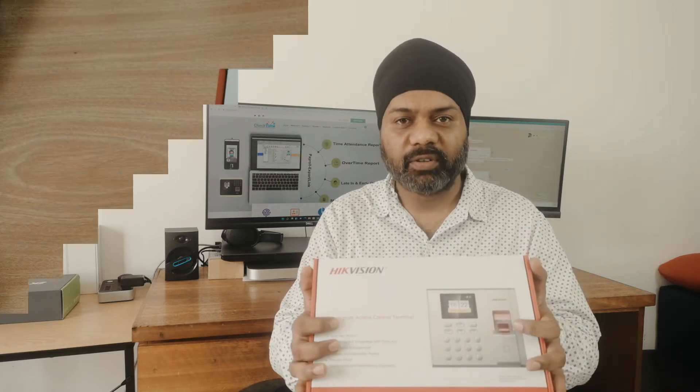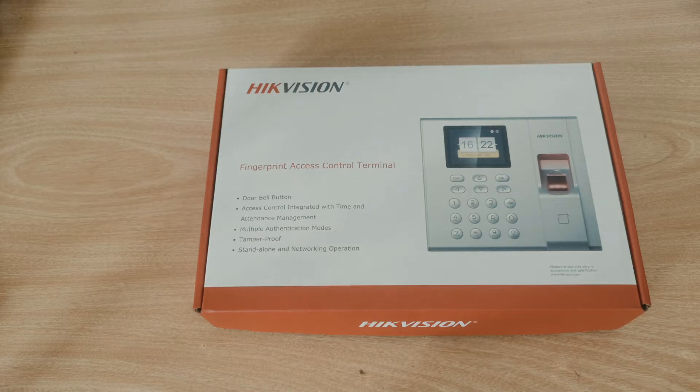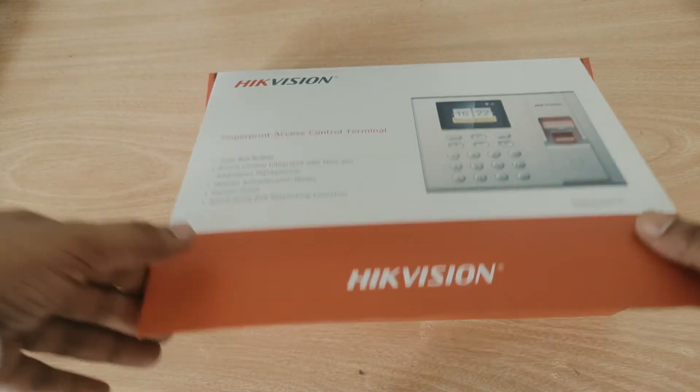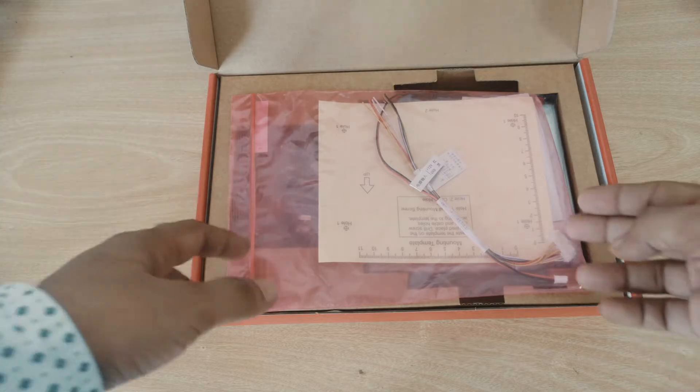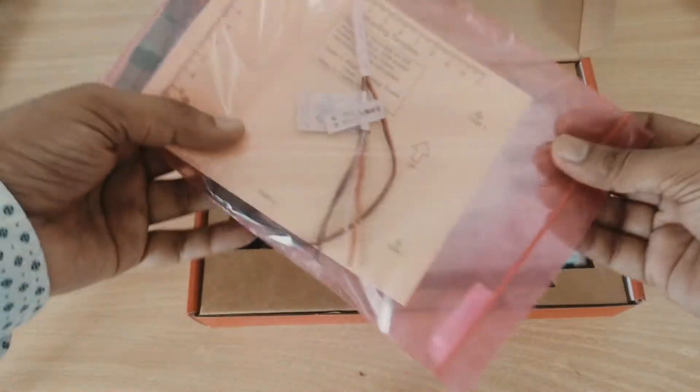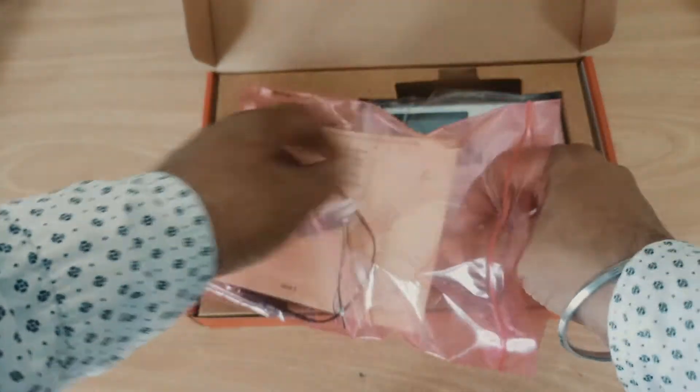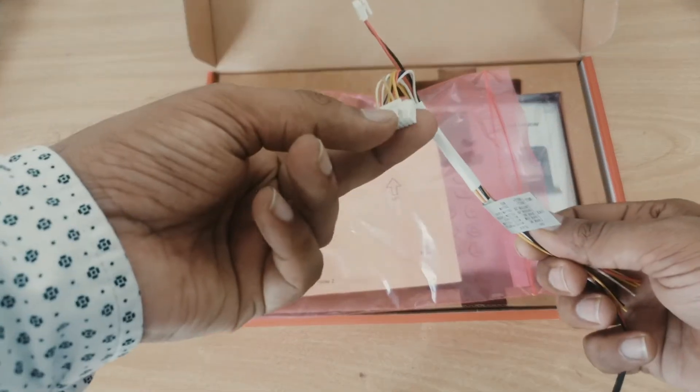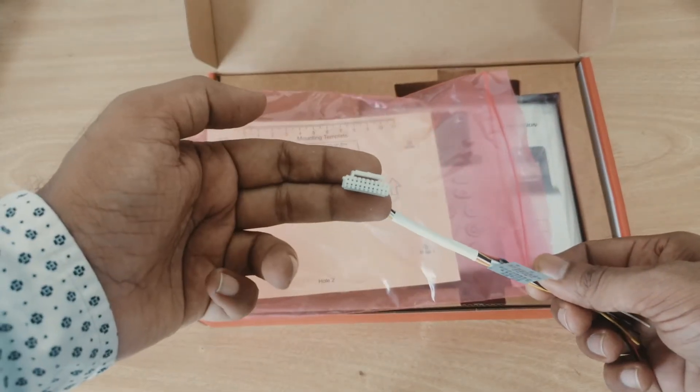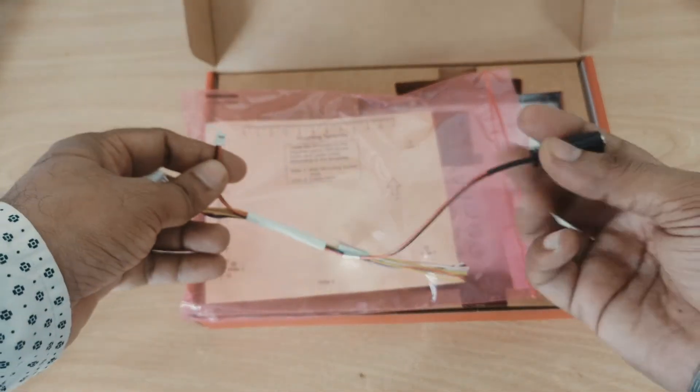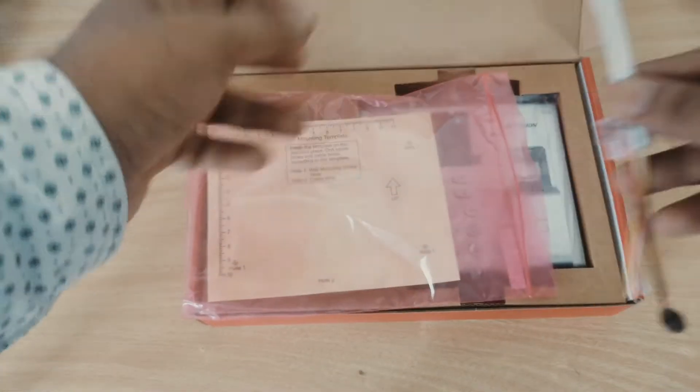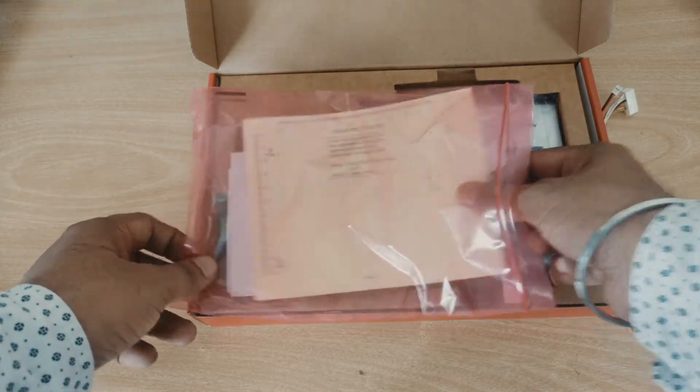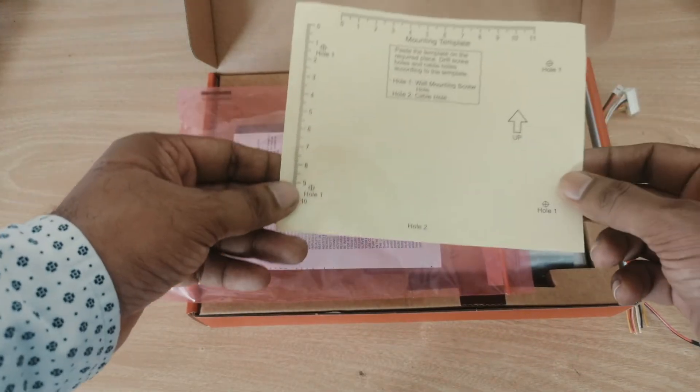Let's open the box. This is the device. First we have some wiring instructions. This is the door access wire - this device can support door access. And this is the power wire, so we can plug the power here. Let's put these on the side.